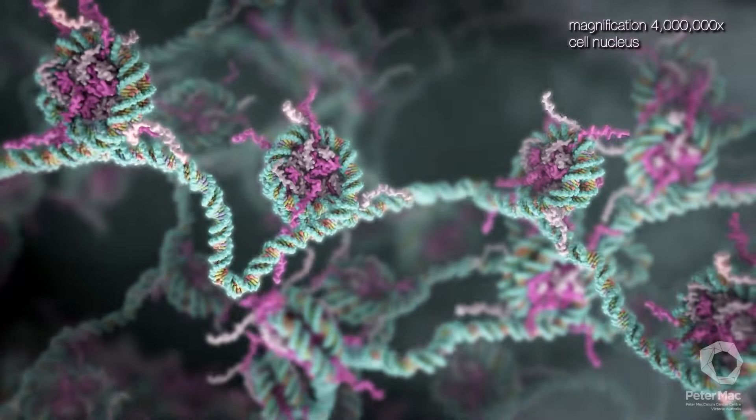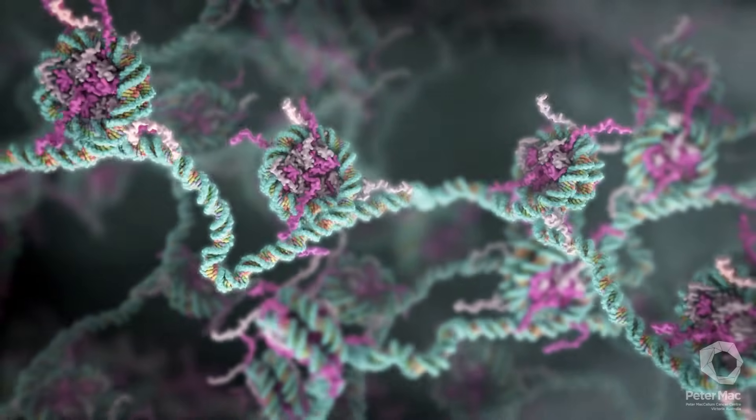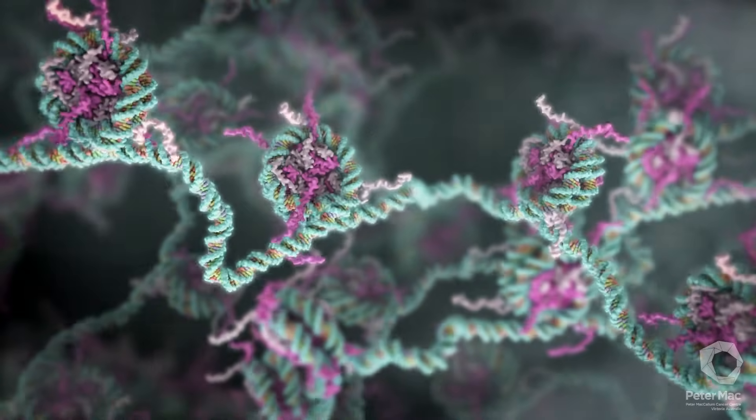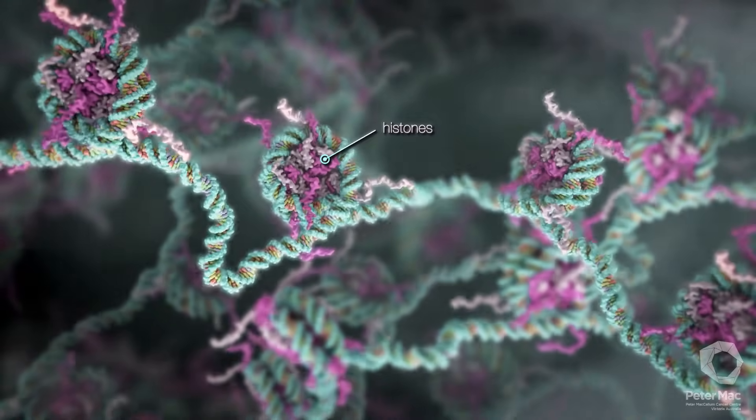To keep two metres of DNA organised within the nucleus, it is wound around special structures called histones, much like thread on a spool.